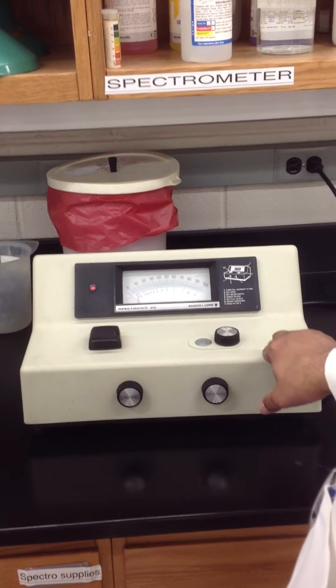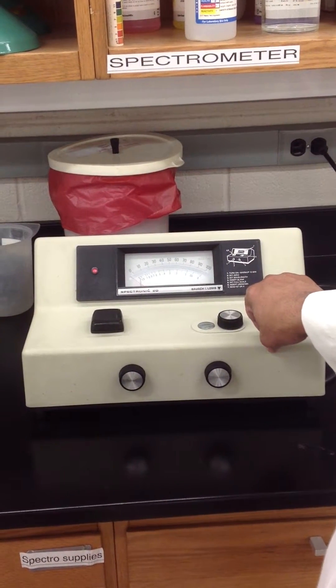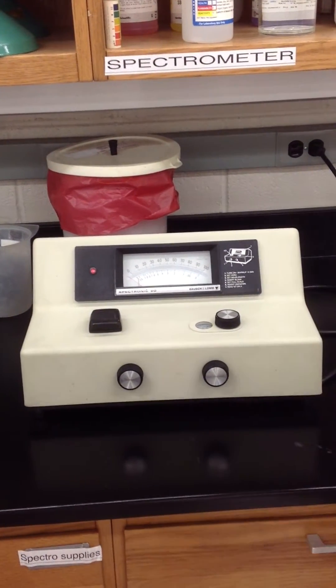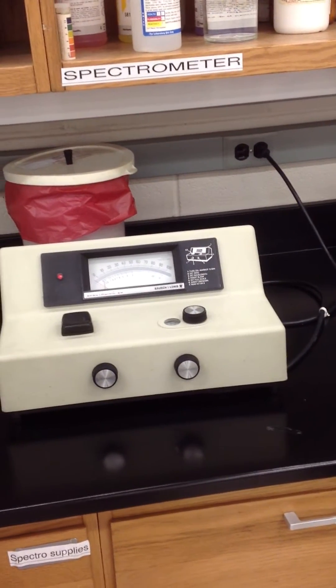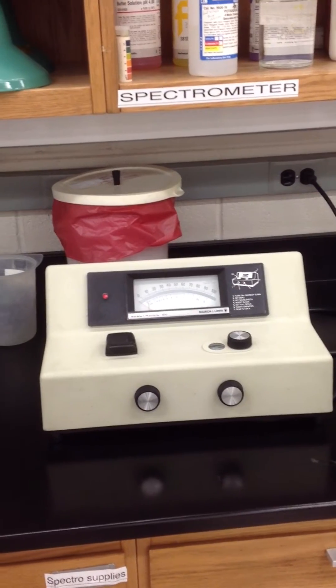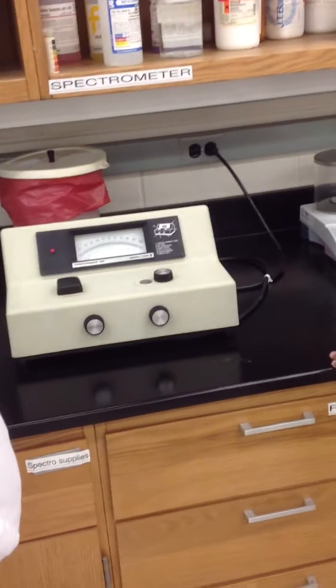You need a blank or a zero tube. That's why we did the zero concentration. So whatever you use to do your dilutions, whatever solution, here we're using Drapkins. So your zero or your blank tube will be Drapkins. That's what we're using to mix.